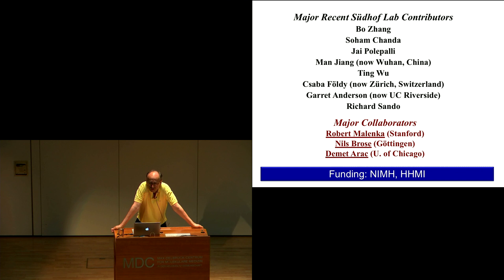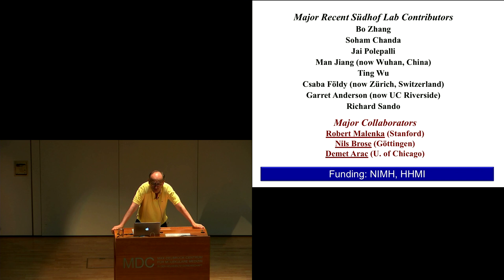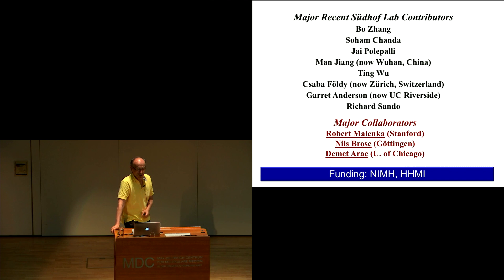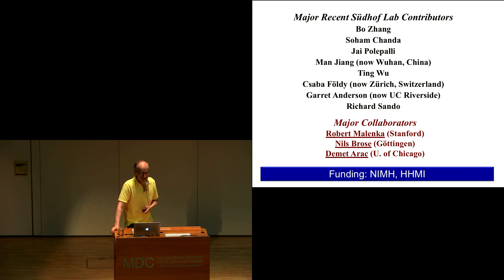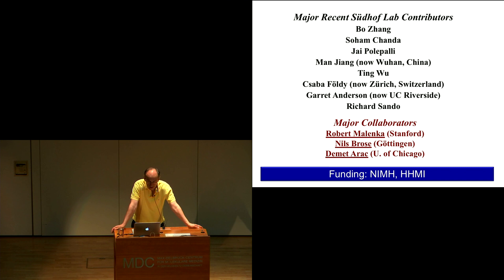I would like to mention the major contributors of these studies. Bojang did all the cerebellar physiology and cerebellar imaging for neuroligins. Shandler did all the work on neuroligins in culture. Jay Bhattapali did the analysis of neuroligin 3 in slices together with Shabbir Feodde. Manmanjang and Ting Wu did the neuroligin 1 analysis in hippocampus slices. Garrett Anderson and Rick Sandow did all the latrophilin work. I have wonderful collaborators at Stanford and elsewhere, in particular Rob Malenka, Niels Brose in Göttingen, and Demet Arak at the University of Chicago. Thank you very much.